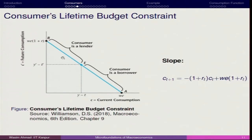The amount that goes to the future period is the saving, and he can go for lending it — this amount becomes 1 plus Rt times St. The moment the consumer moves beyond the endowment point, it is in the borrowing zone. The moment he moves to the other side, it is the lending zone. If he is consuming less than current income, that amount of current income is saved and can be transferred to the future period.